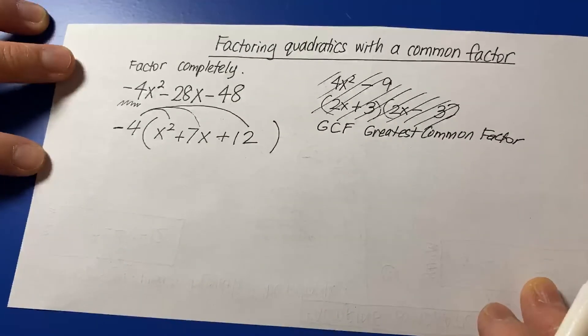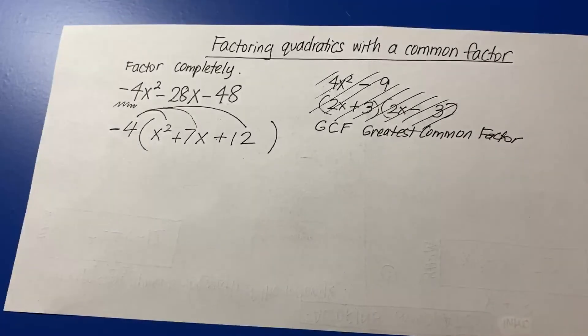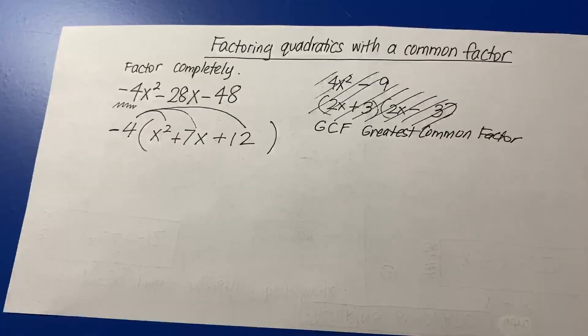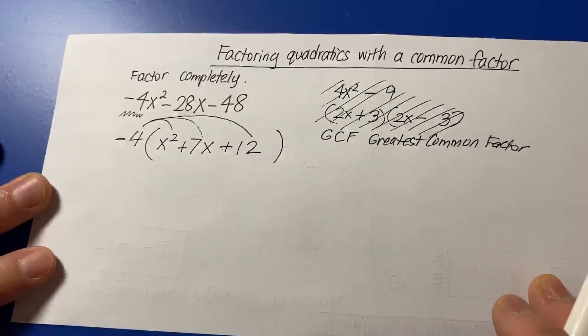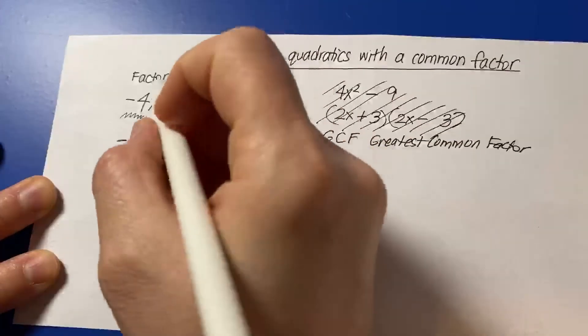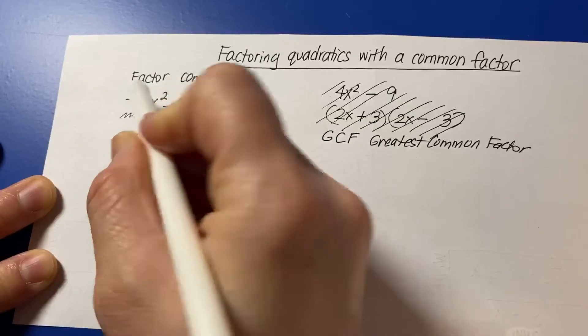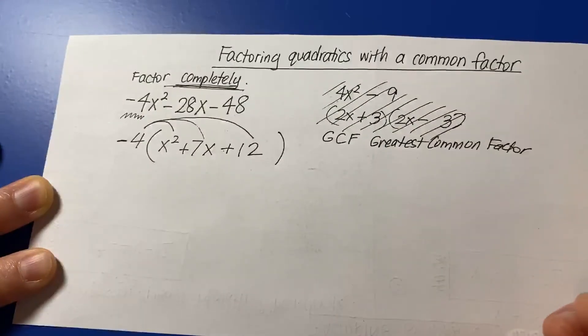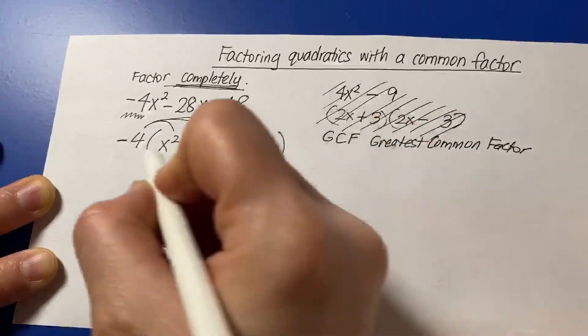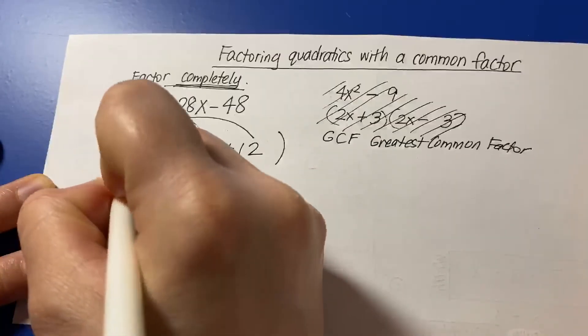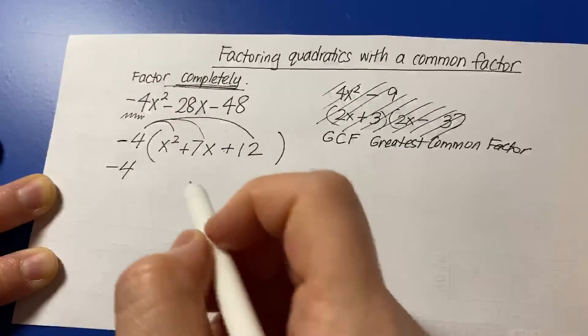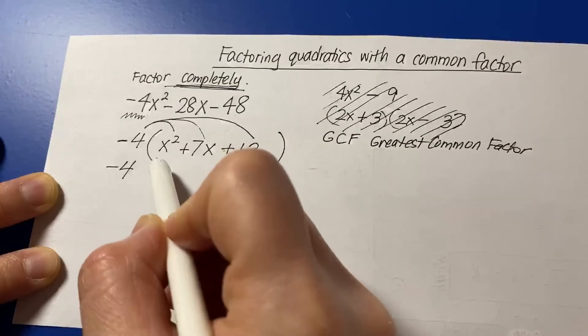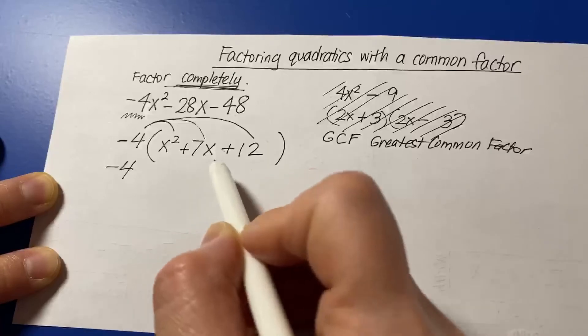Now, if you see here right now, it seems like we're done, right? GCF was supposed to be one set of parentheses. However, this is one of those really sneaky problems on the regions. Here it says factor completely, which means we need more work to do. So the negative 4, we're going to leave it alone. And now, if you see inside this parentheses, this is another factoring problem.